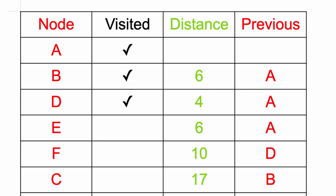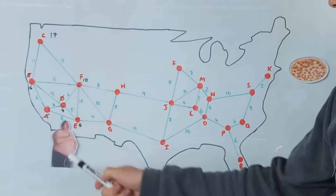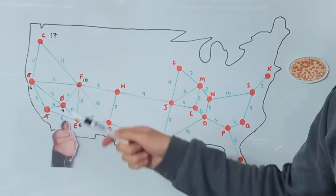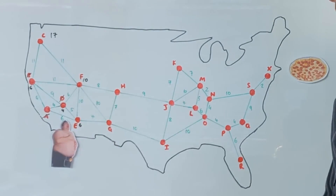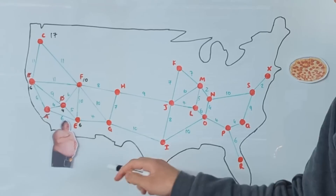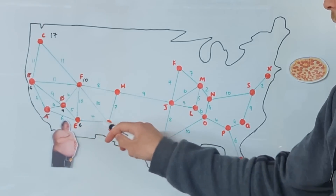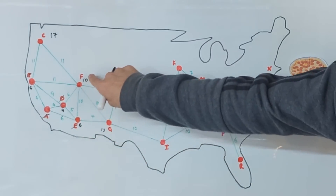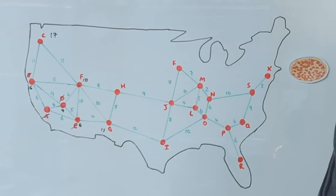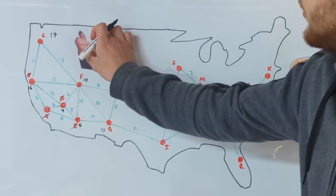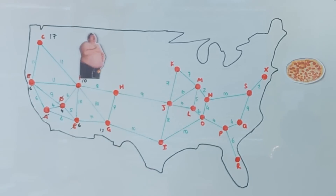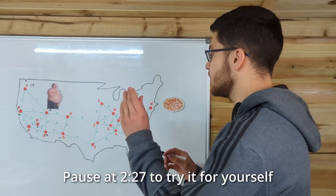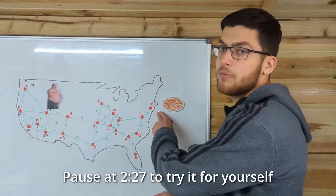Now he's visited B. The next shortest path to visit is E. At E, he can get to F in 6 plus 10, which is 16. But that doesn't matter because we've already got there in 10. And he can also get to G, which is 6 plus 7, which is 13. Now he's visited E, the next shortest path is finally back to F. So he's going to go to F and have a look at what he can visit, and just repeat doing this again and again until he works his way up to X.